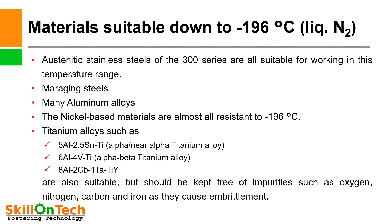Materials suitable down to –196°C, such as for liquid nitrogen which boils at –196°C. Austenitic stainless steels of the 300 series are all suitable for working in this temperature range — for example SS304, SS316, or SS321. Marraging steels are iron alloys known for possessing superior strength and toughness without losing ductility. These steels can also be used for high temperature service up to –480°C, have very good improved strength, and are used for gas turbine engine casings or aerospace structural members.